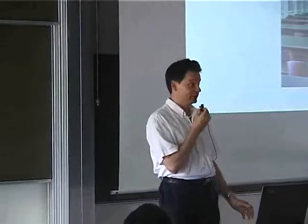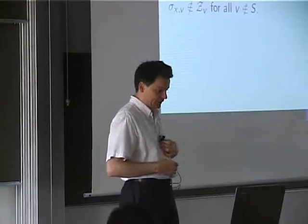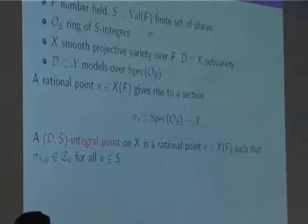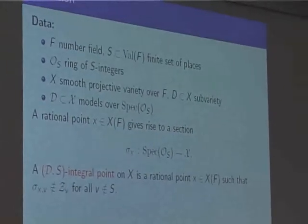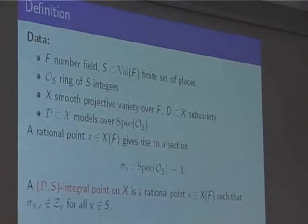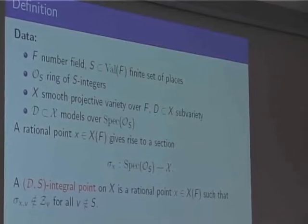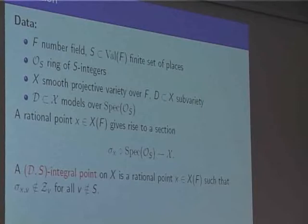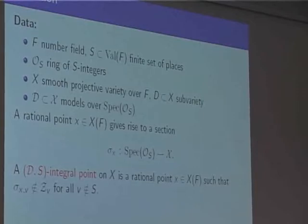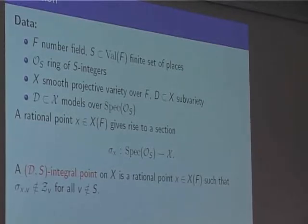Today we will discuss integral points and asymptotics of integral points. Some basic data: we have a number field F and a finite set of places S, including the archimedean ones, a ring of S-integers, a smooth projective variety over our number field, and a subvariety D. We fix integral models. A rational point is a section with integral coordinates after clearing denominators. A D,S-integral point on X is a rational point with the property that for all places outside S, this section doesn't meet the reduction of the boundary D.